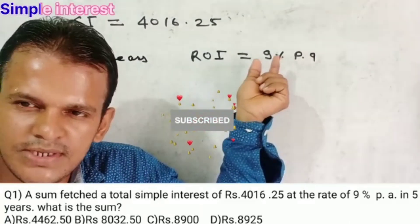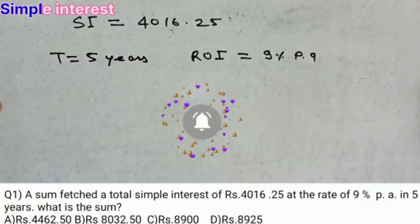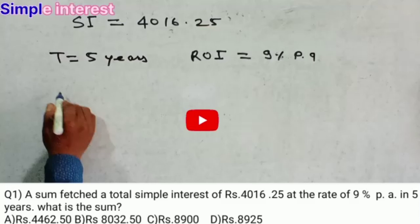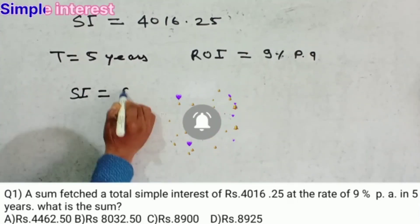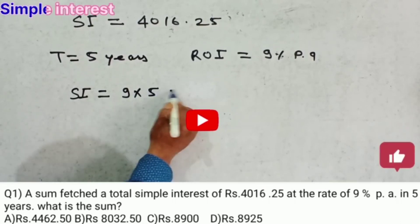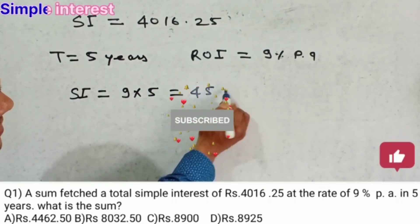Rate of interest is every year. So in 5 years, total simple interest will be 9 into 5, which is 45%. Right?